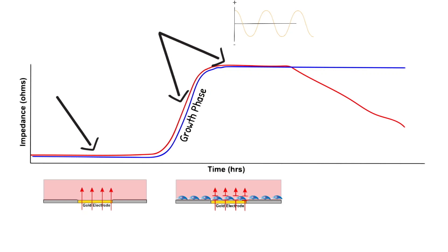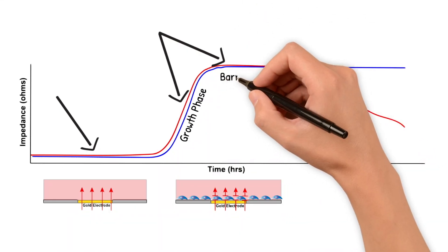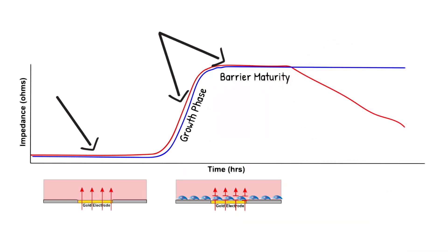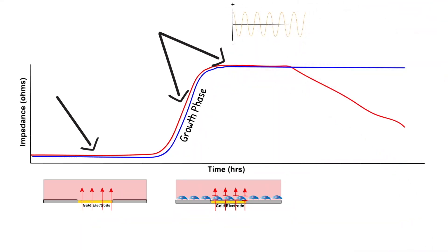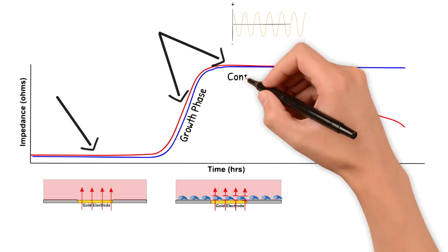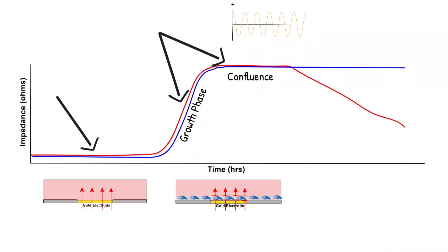As previously mentioned, if we have low AC frequency, the majority of the current is moving through the resistive pathway and the impedance rise and plateau represent barrier formation to maturation. But if we're viewing the impedance at high AC frequency, then the rise and plateau in impedance represents cell growth to confluence of the cell monolayer.